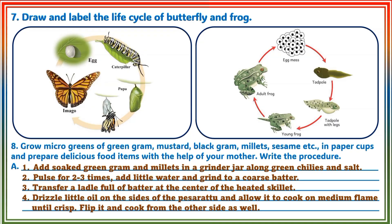Answer: 1. Add soaked green gram and millets in a grinder jar along with green chilies and salt. 2. Pulse 2-3 times, add little water, and grind to a coarse batter. 3. Transfer a ladle full of batter at the center of a heated skillet. 4. Drizzle little oil on the sides and allow it to cook on medium flame until crisp. Flip it and cook from the other side as well.